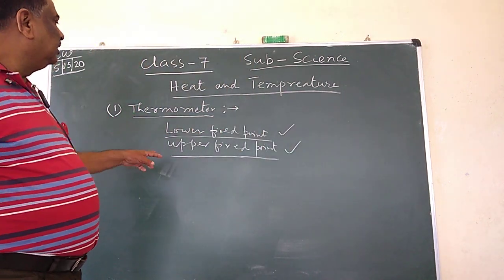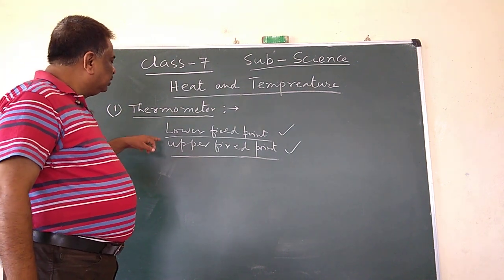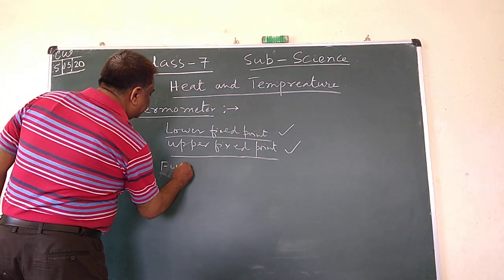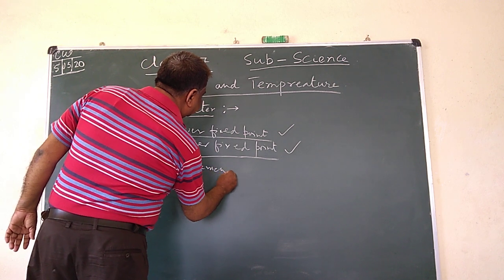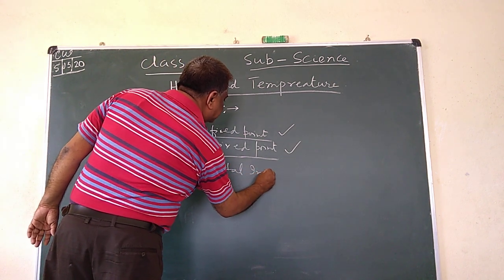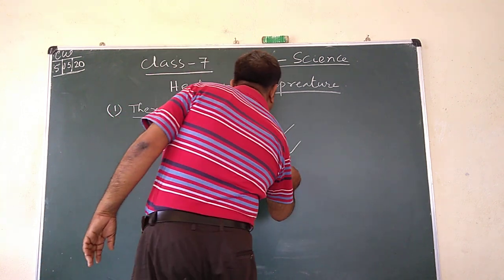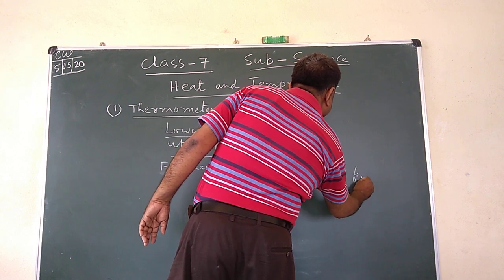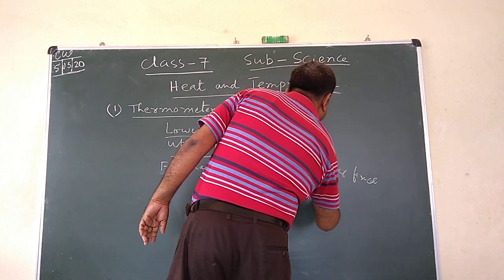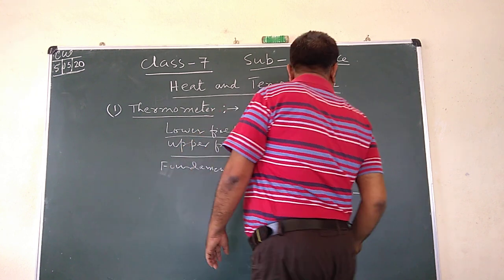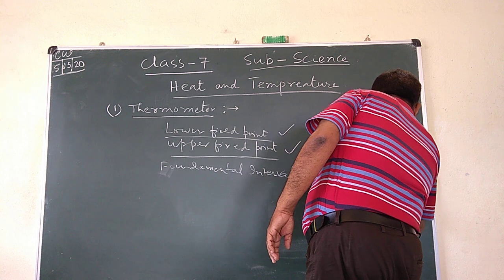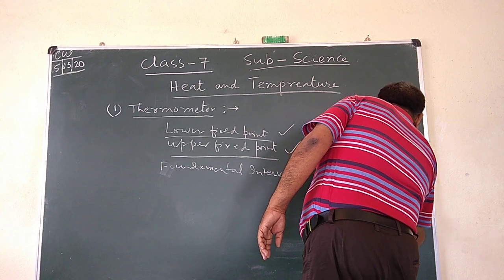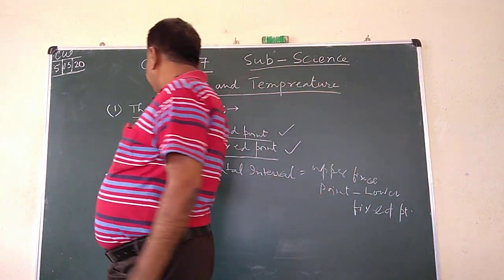The difference between the upper fixed point and lower fixed point is called the fundamental interval. Fundamental interval equals upper fixed point minus lower fixed point.